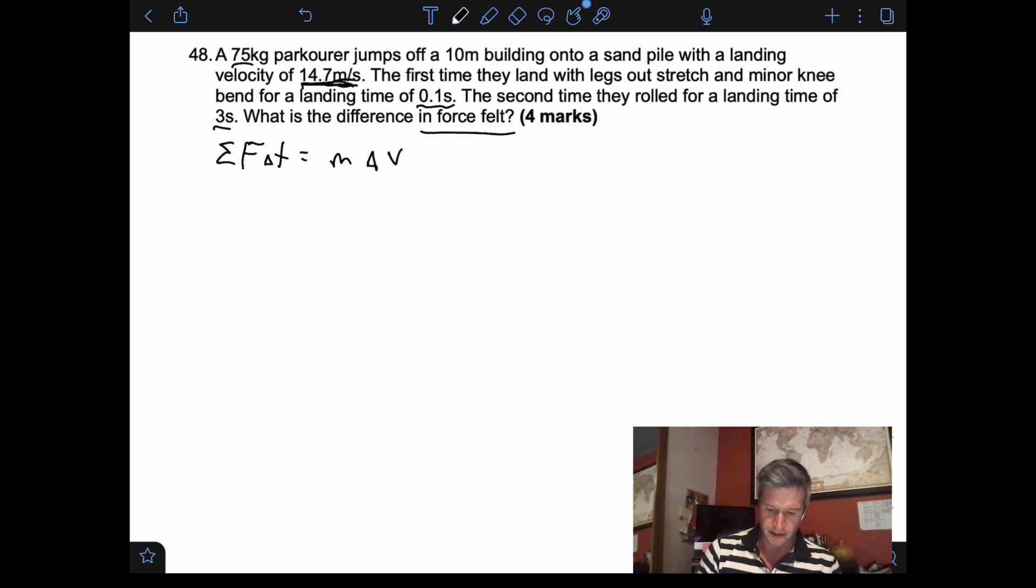We can collect all our variables here. So we could say mass is 75 kilograms. We have two times, so T1, T2, or we could even try to track that along and be a bit more specific. So we could say T straight leg landing is 0.1 seconds, T roll is 3 seconds. And we know the velocity final that this impact is occurring at is 14.7 meters per second. So with all this information, we're pretty much ready to start and plug in.